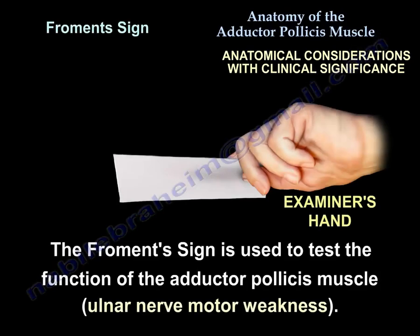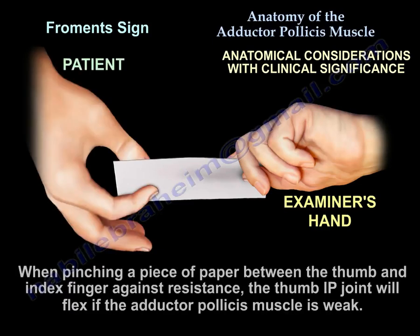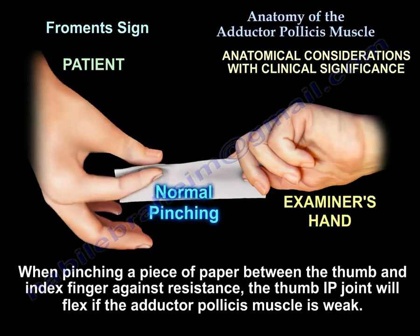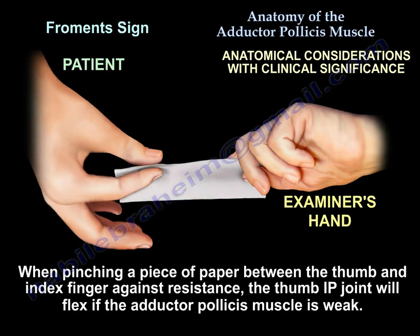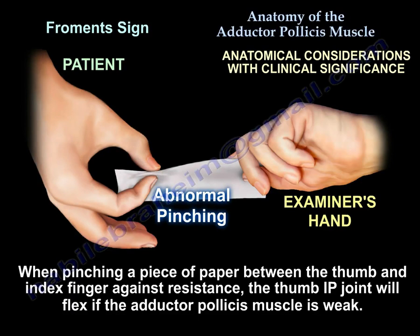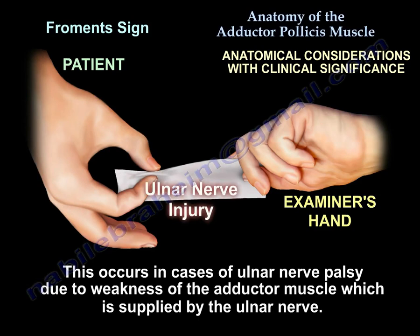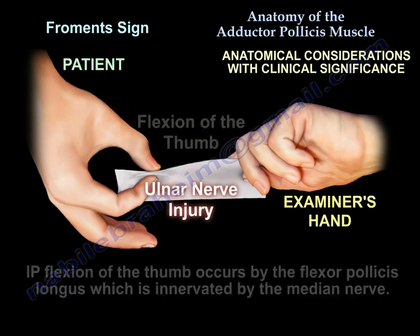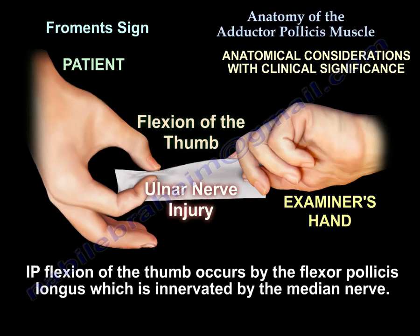Froment's test: a test for ulnar nerve motor weakness. You place a piece of paper between the thumb and index finger and ask the patient to hold it. The examiner tries to pull the paper away. In ulnar nerve palsy, the adductor pollicis is weak, so the patient compensates by flexing the IP joint — using flexor pollicis longus, which is median nerve supply. IP flexion at the thumb is a positive Froment's test — a compensatory maneuver.